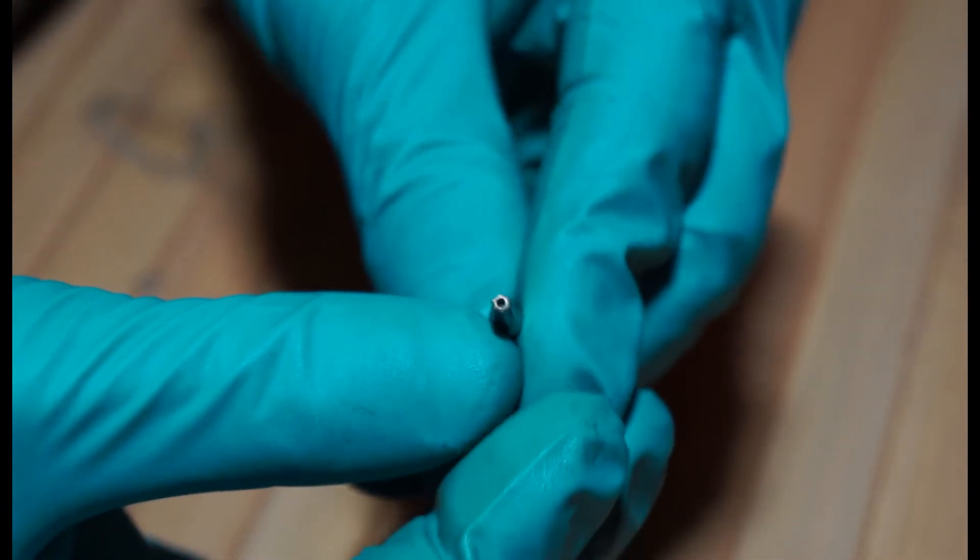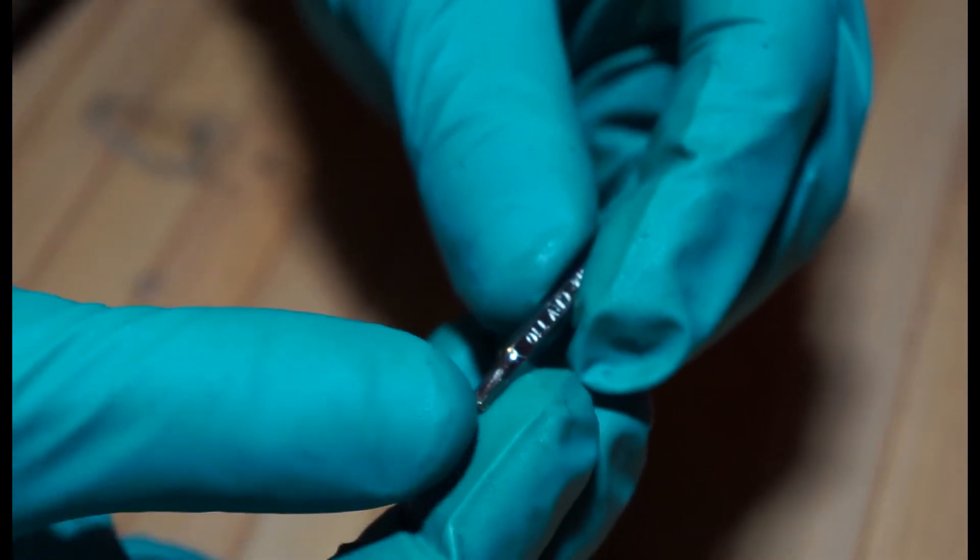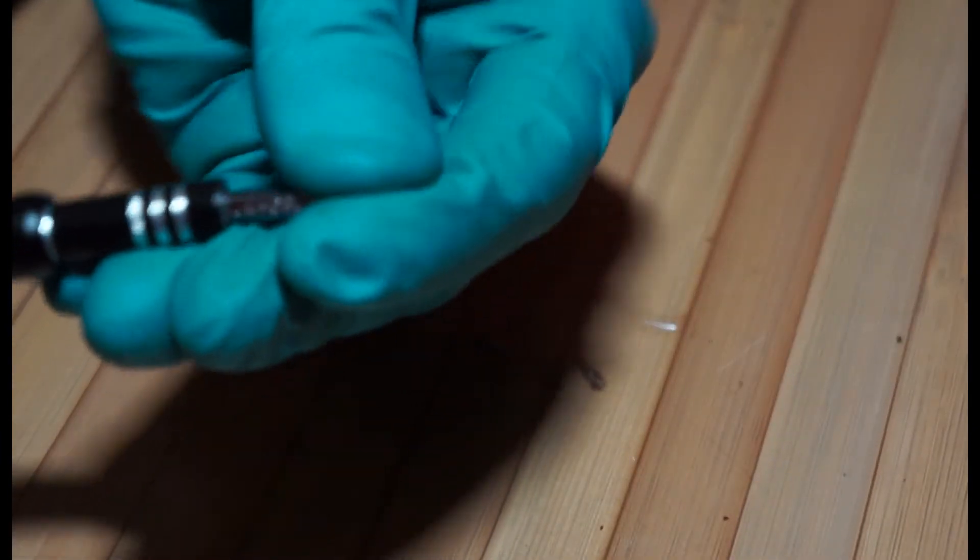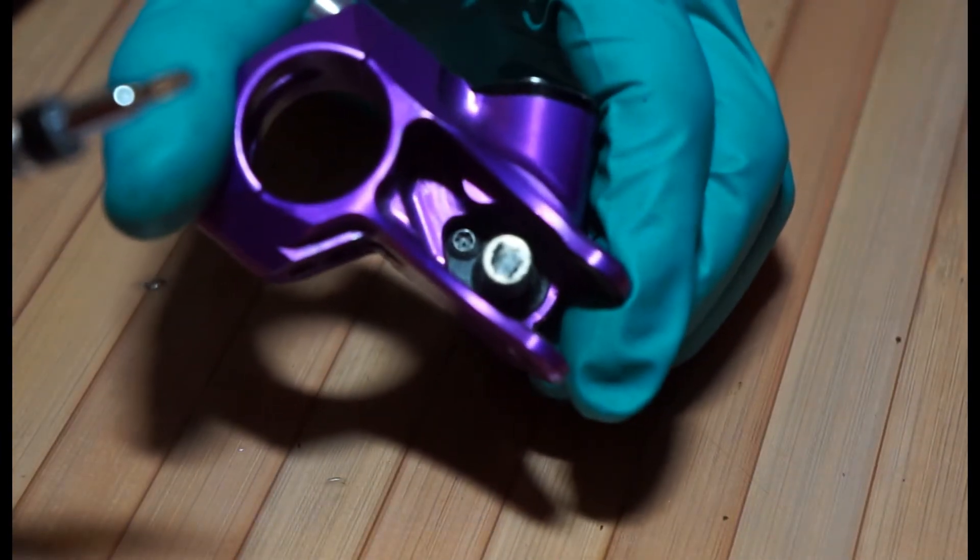I'll grab the bit and show you if we can get the camera to focus. That's the T10 Torx bit there. It's got a tiny little hole in the middle. And that's what you need to remove that little plate inside there.